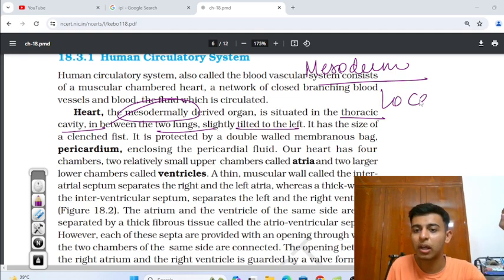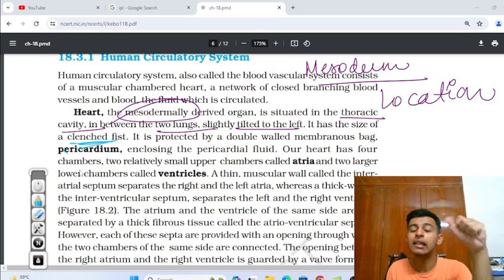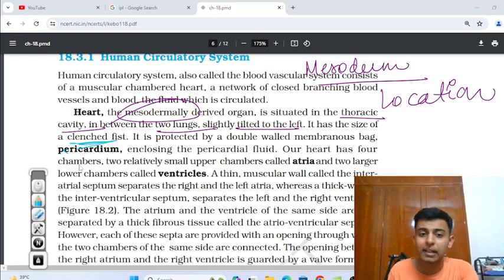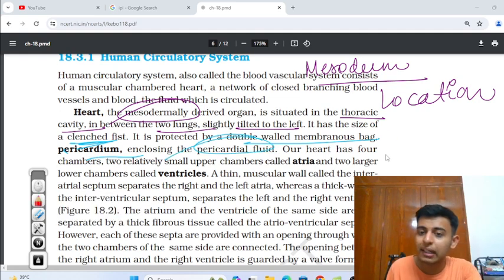Heart, the mesodermally derived, so from the germ layer, the mesoderm germ layer gives rise to the heart, is situated in the thoracic cavity in between the two lungs, slightly tilted towards the left. This is the location of the heart. They can directly ask you in the form of MCQ, so you must know the location. It has a size of a clenched fist. Clenched fist is like this. This way, every line has to be read.